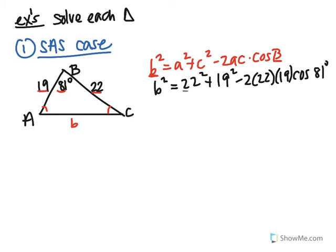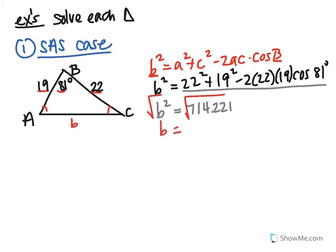Go ahead and type this whole thing into your calculator. Since it's squared, you'll need to square root at the end to get side b. When you type it in, you'll get 714.221 under the square root. Square rooting that, b comes out to be about 26.7 — rounded to the nearest tenth. And that's not degrees, it's just 26.7 — it's a side length.